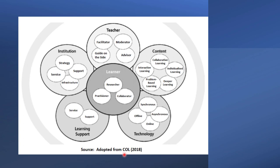The learning support comes in formal service or support. Then you have the institution bringing the strategy, support, service, and infrastructure. The learner is a researcher, a collaborator, and a practitioner. If you look at this diagram again, you see that the learner is at the center and others are interrelating, bringing the learner to the middle. That shows that the learner needs all of this to be able to progress.